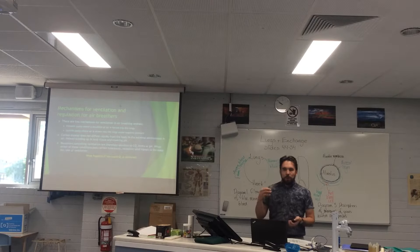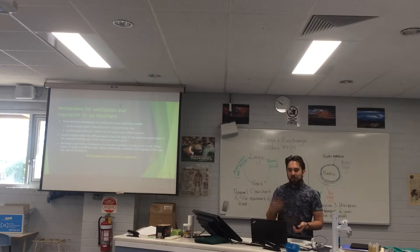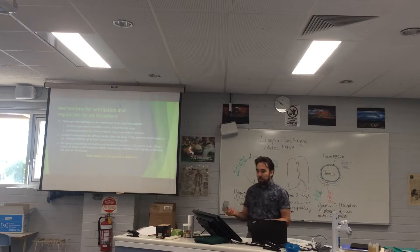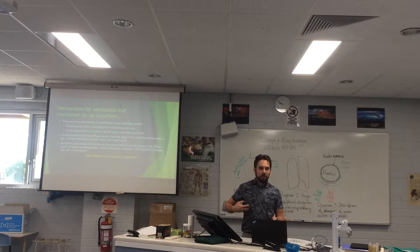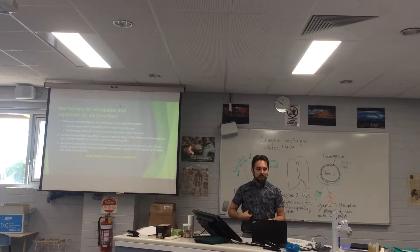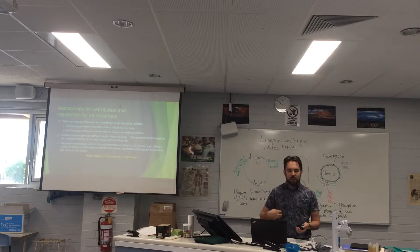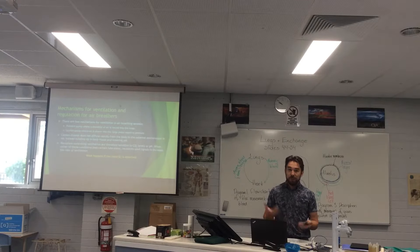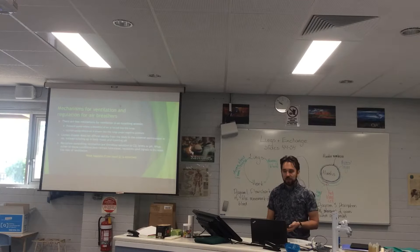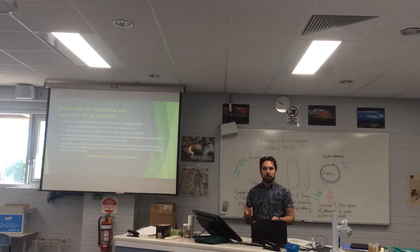We actually have a vacuum within our bodies, and if that vacuum gets punctured — so if something sharp penetrates through our ribcage and breaks that vacuum, or if something unusual happens such as internal damage, or in some cases it just happens spontaneously — that's called a collapsed lung, and it means that negative pressure has been lost.